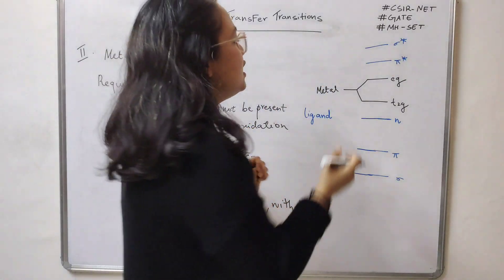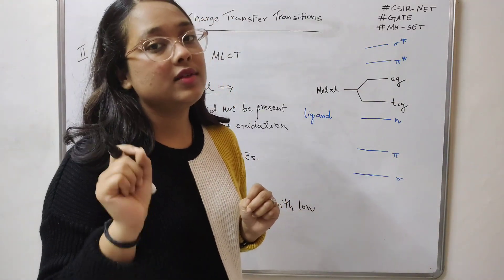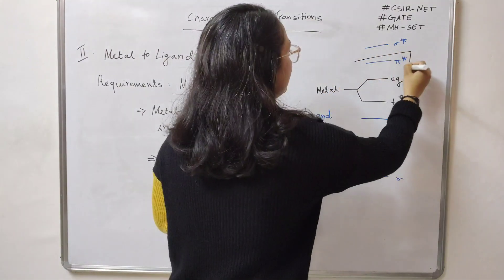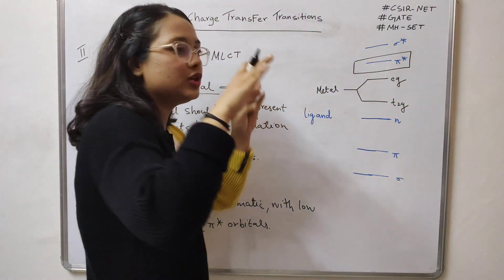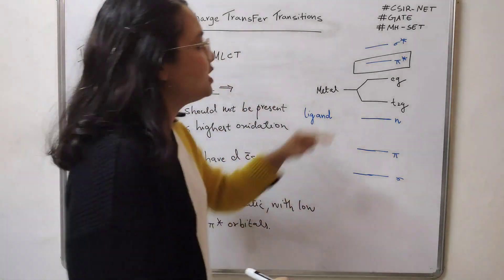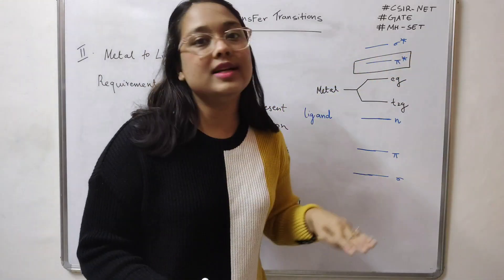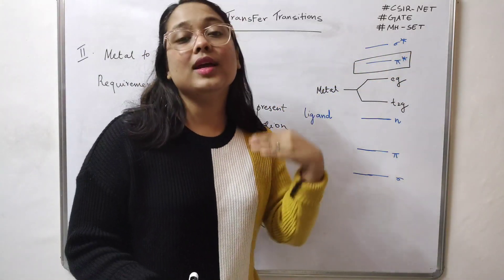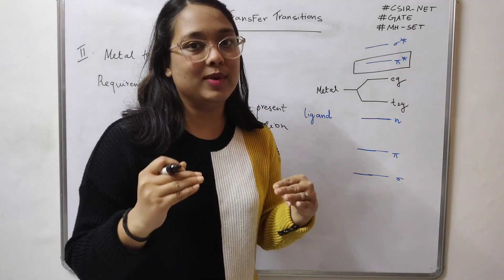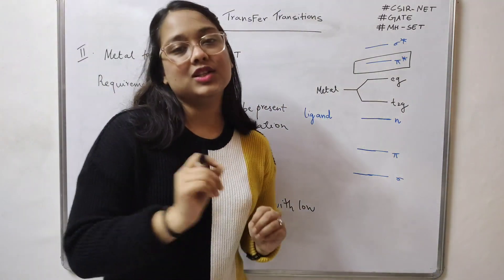The metal donates electrons to the ligand, and this donation can happen from the t2g or eg level. What is important for the ligand is that the π* orbital should be lower in energy — that is what we mean by low-lying π* orbitals. The lower the π* orbital, the closer it is to the metal orbitals, and the more easily electrons can jump from the metal to the ligand.